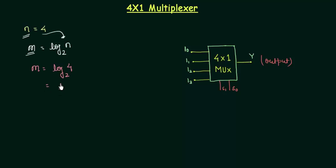m is equal to log base 2 of 4. I can also write it as log with base 2, it is equal to 2 to the power 2. Now by the properties of the logarithm we are having 2 log base 2 and then 2. Whenever there is a log having base a and the number is also a then it is equal to 1. So 2 multiplied by 1 is equal to 2. So m is equal to 2 and m is our select line.